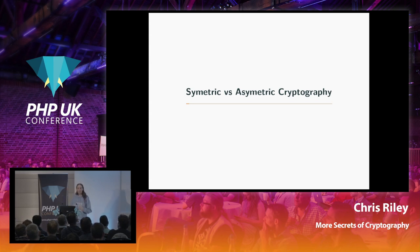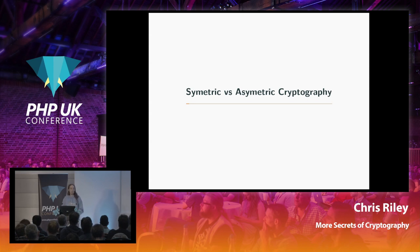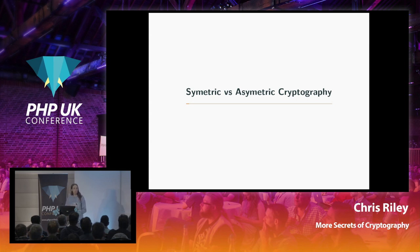A physical analogy for this is a padlock. Imagine passing someone at the back of the room a metal box and a padlock. They write a message, put it in the box, click the padlock shut, and pass it forward. Nobody passing it forward can look inside. But at the front, the key holder can unlock the padlock and read the message. That's a similar concept to how asymmetric cryptography works.